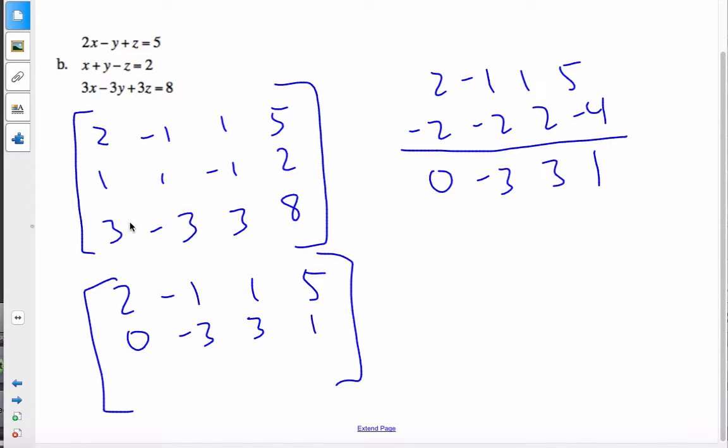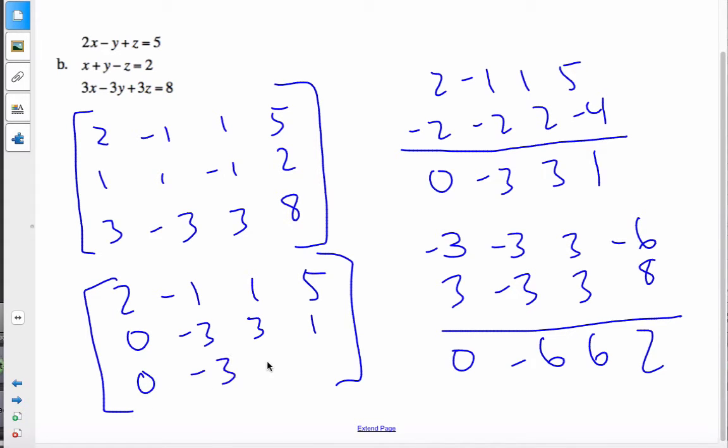Now I want to make the third line down here. One of the easy things, I can also use these two rows, add them together, which would be I'm going to multiply this by negative 3, negative 3, 3, and negative 6. 3, negative 3, 3, and 8. I go along and I add them up. I get 0, negative 6, 6, and 2, which is divided by 2. I get 0, negative 3, negative 3, and 1.